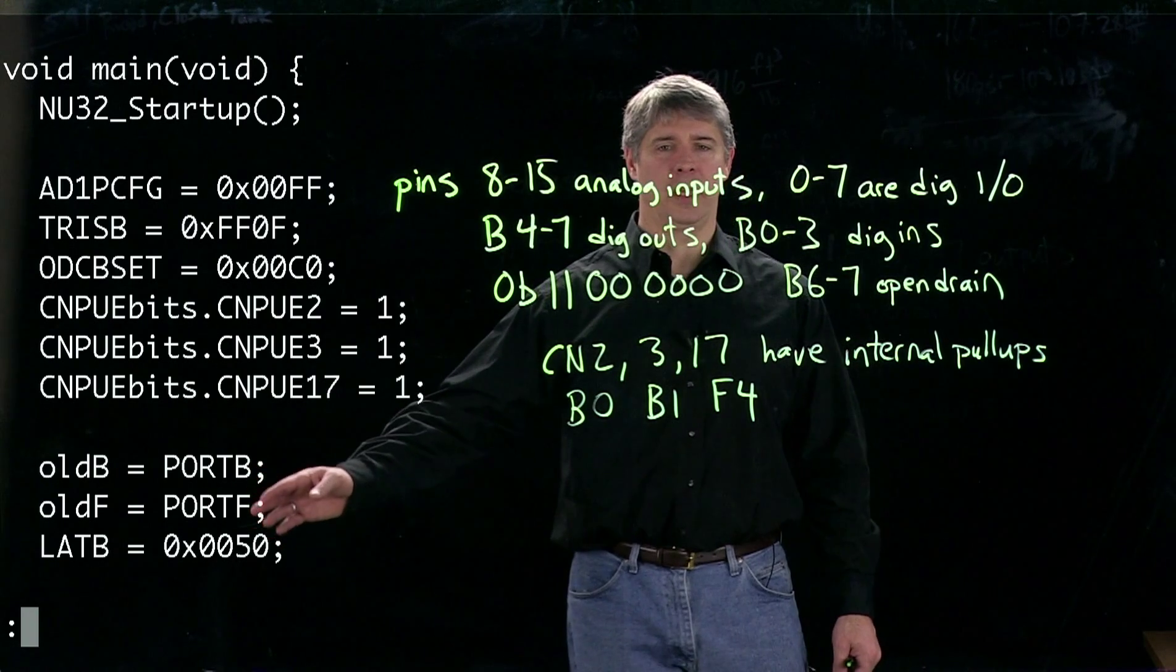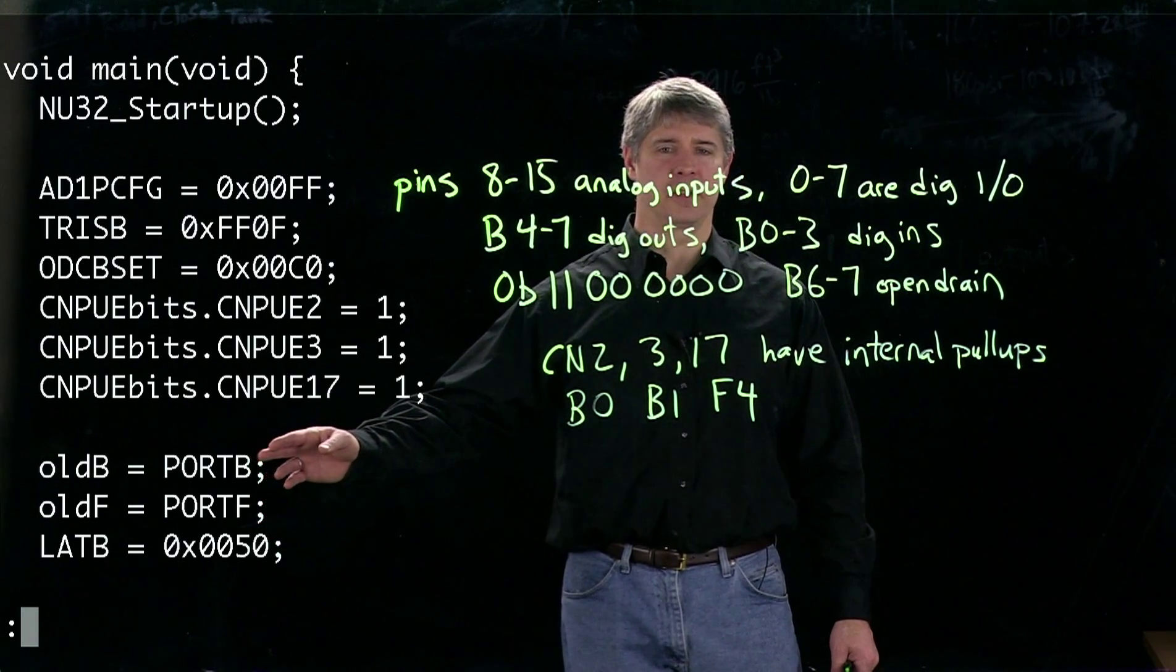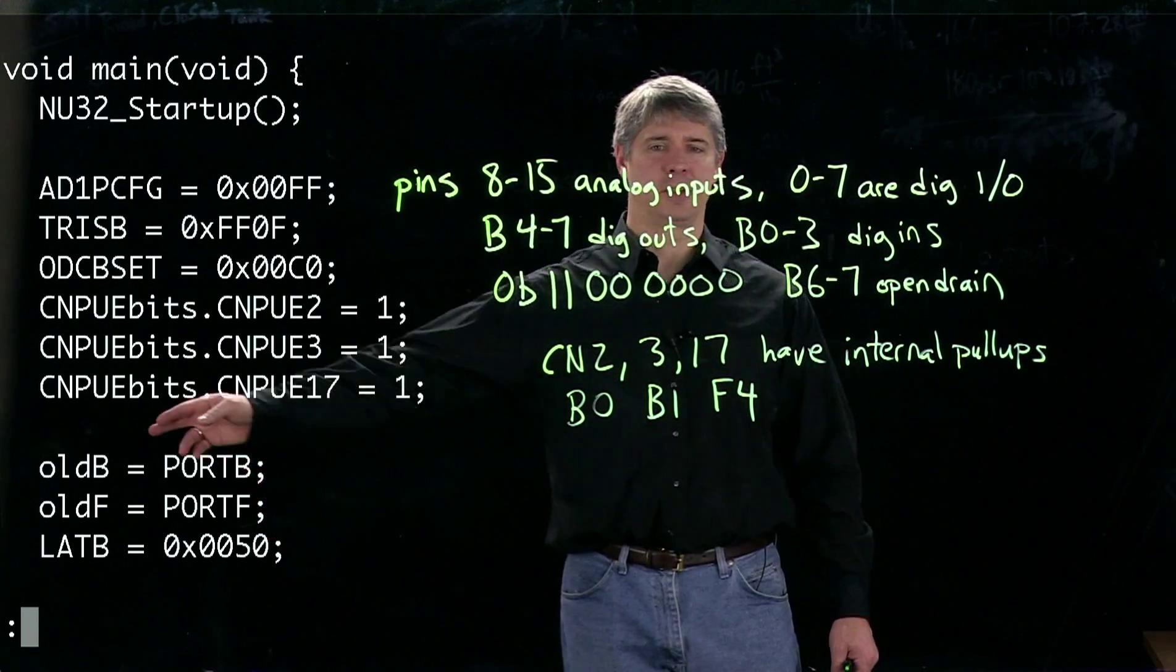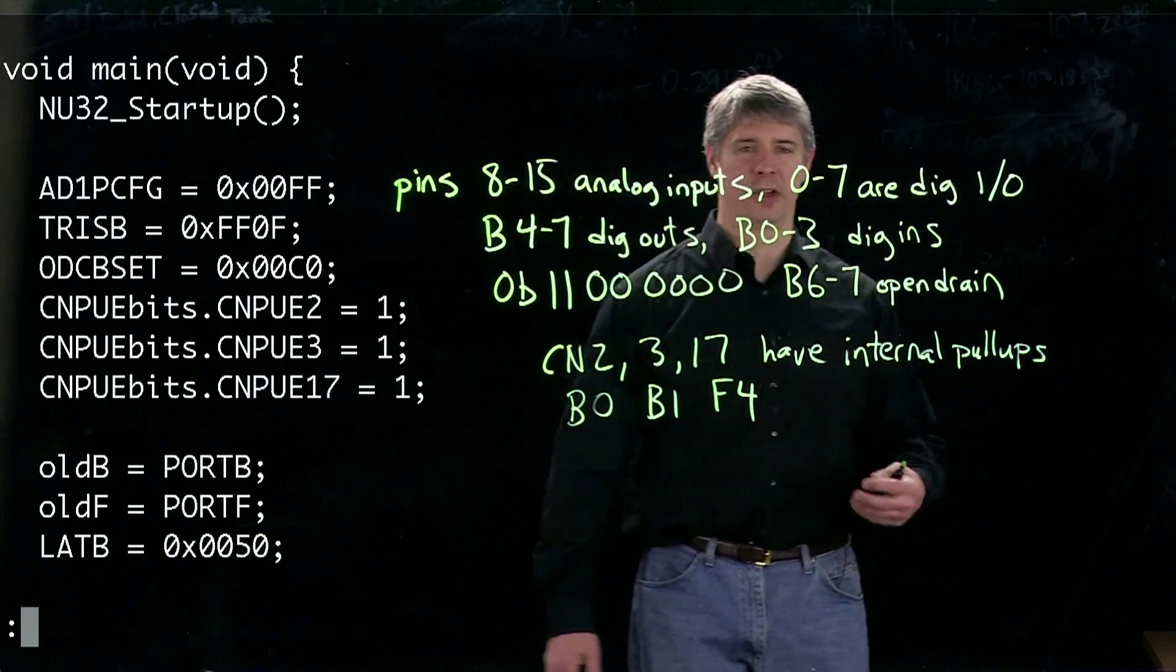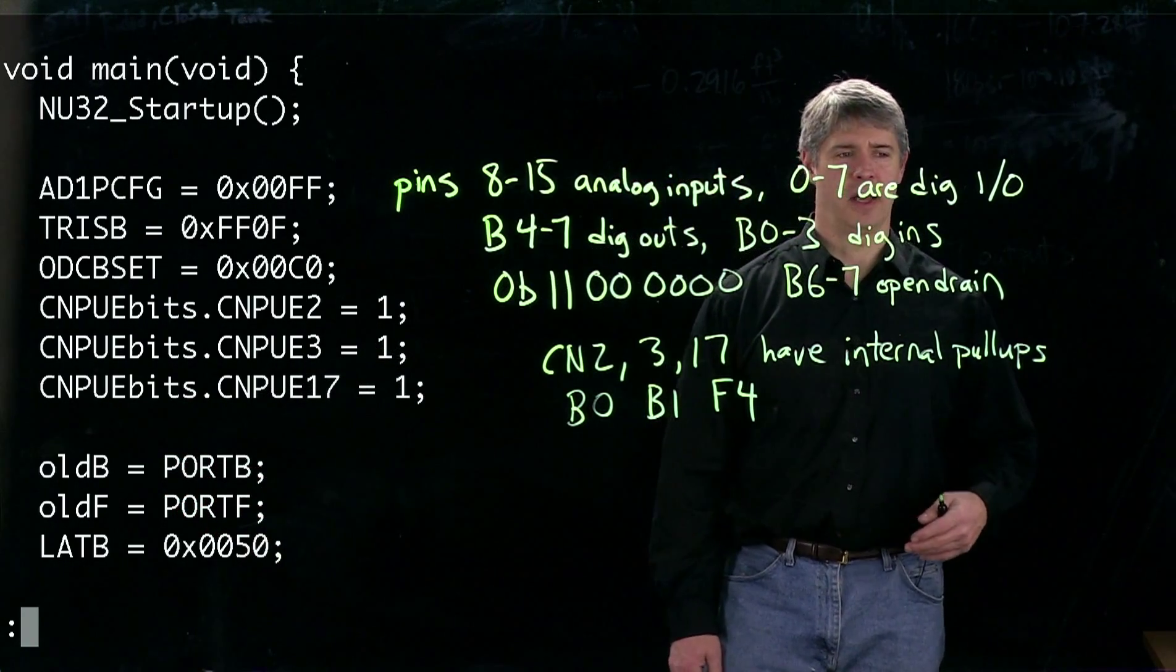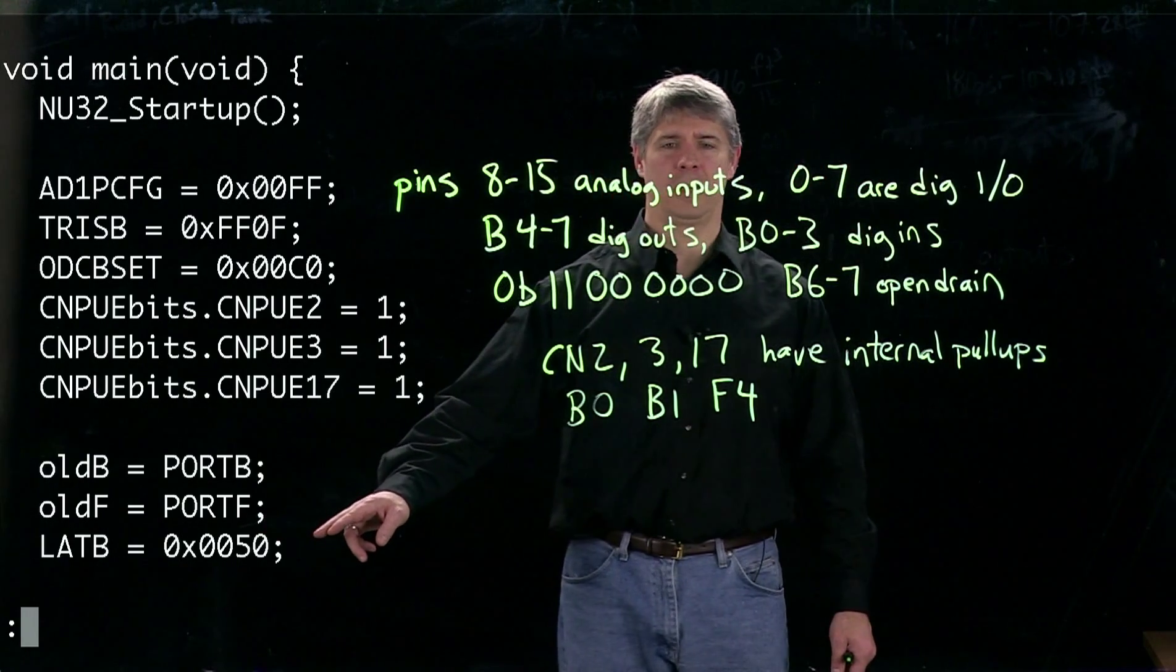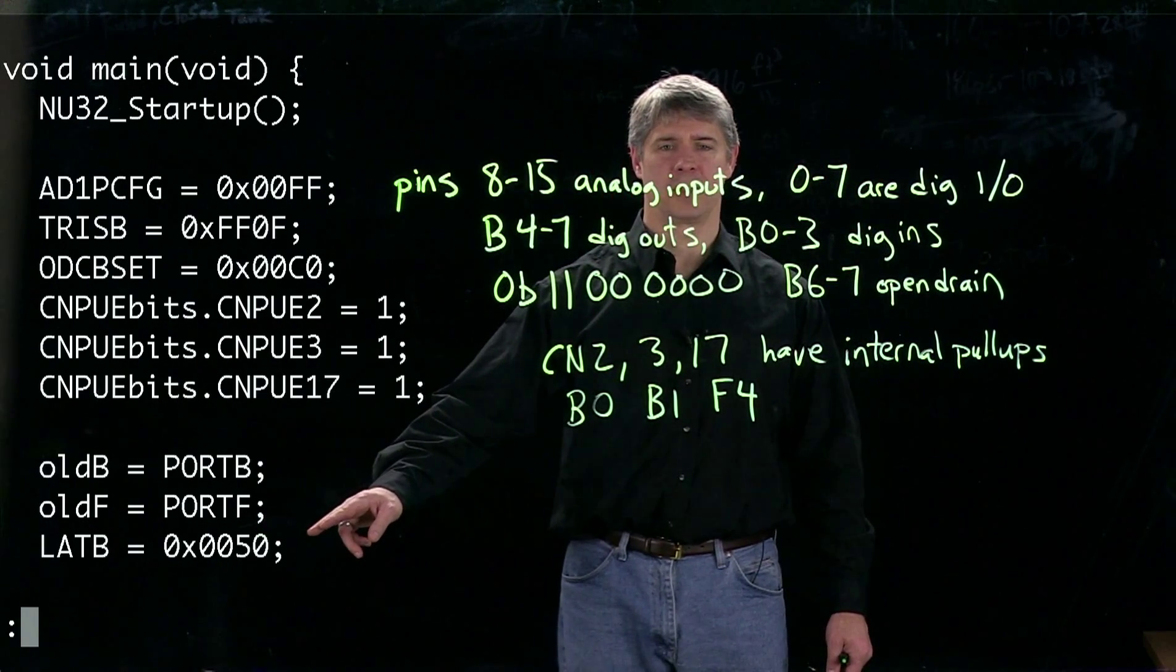Then down here, we read the current values at port B and port F into oldB and oldF, so we can use that in the interrupt service routine comparison. Finally, we set some of the digital outputs.